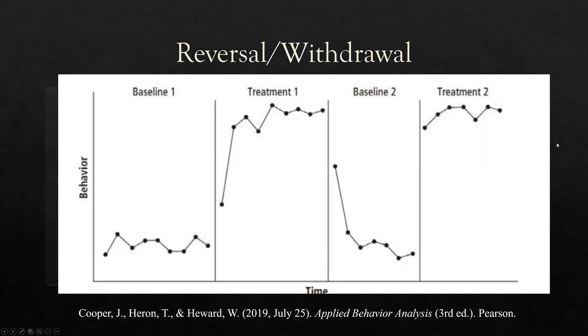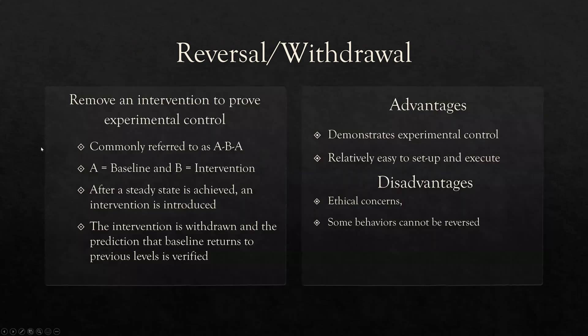Let's start with reversal and withdrawal. This is the most common design — what pretty much everybody thinks of first with single subject design. We have our baseline, our treatment, back to baseline, back to treatment. In essence, that's what we're doing with the reversal or withdrawal design: implementing an intervention and then removing it. It's excellent at identifying experimental control because we're actually taking away what we added to change the behavior. More commonly known as the ABA design — A being baseline, B being intervention, A being back to baseline.